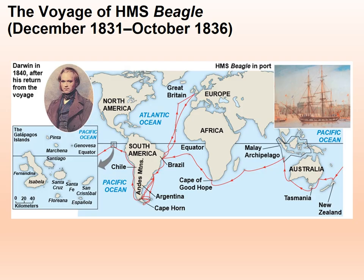This is the voyage of the HMS Beagle. Starting out in Great Britain, moving around South America, and then here — the Galapagos Islands. The trip went from the Galapagos Islands and then around the globe — back to Australia, down around the whole end of Africa, and then back to Great Britain. But it was in the Galapagos where he found a lot of his interesting observations.